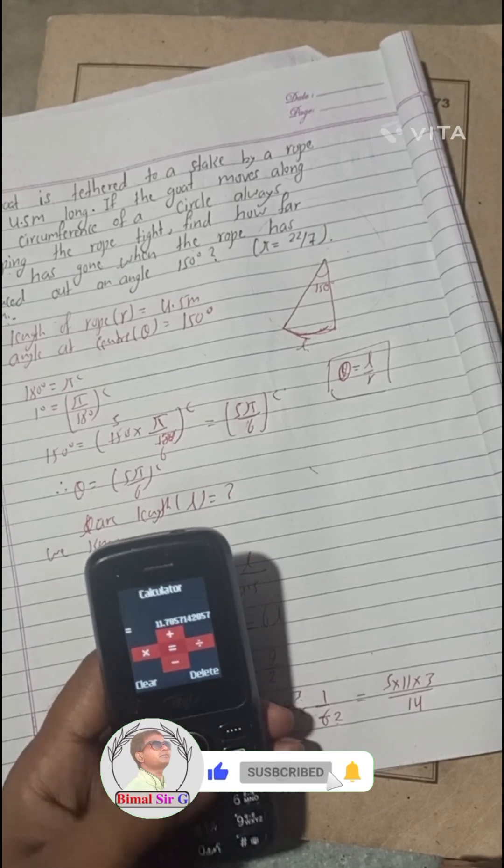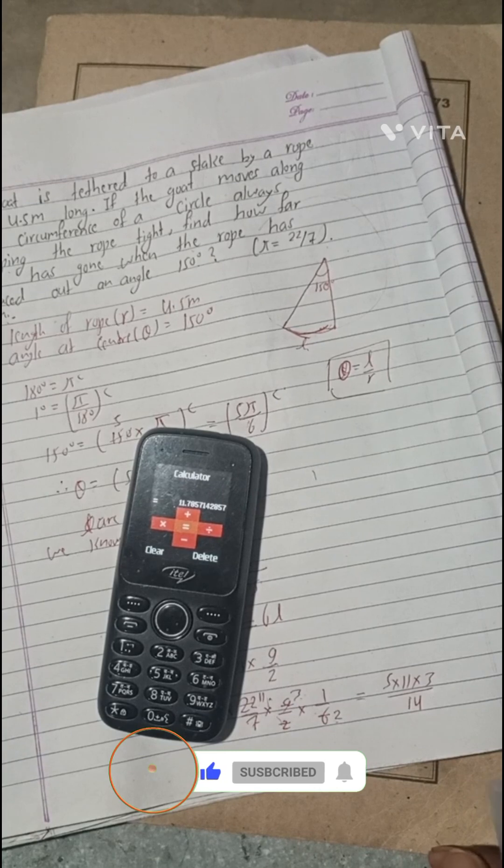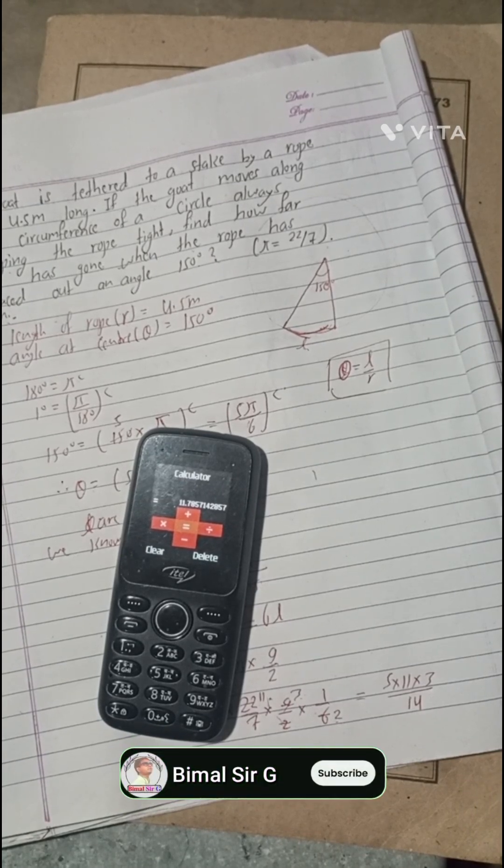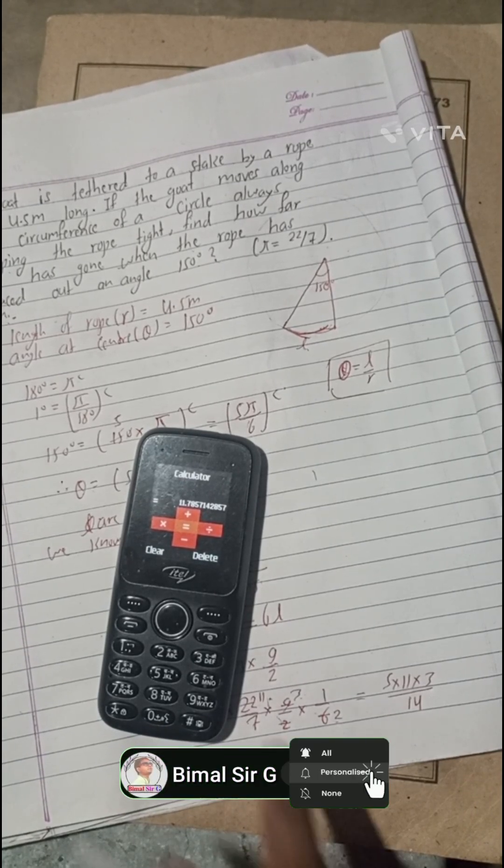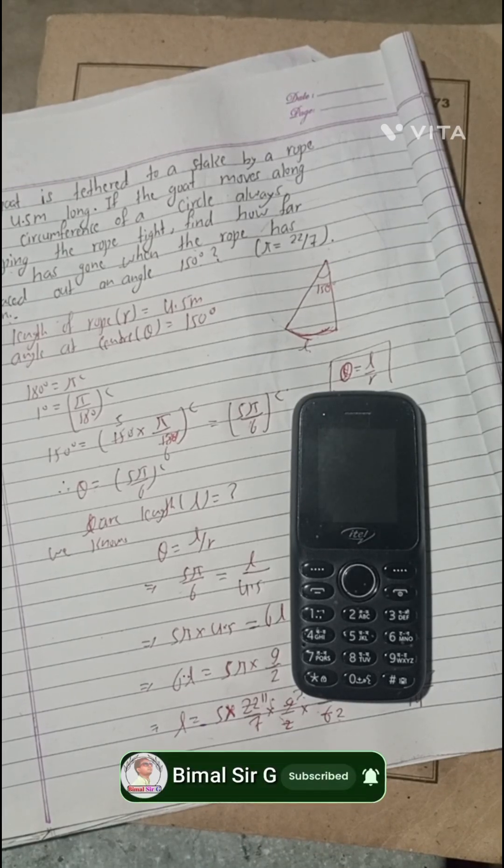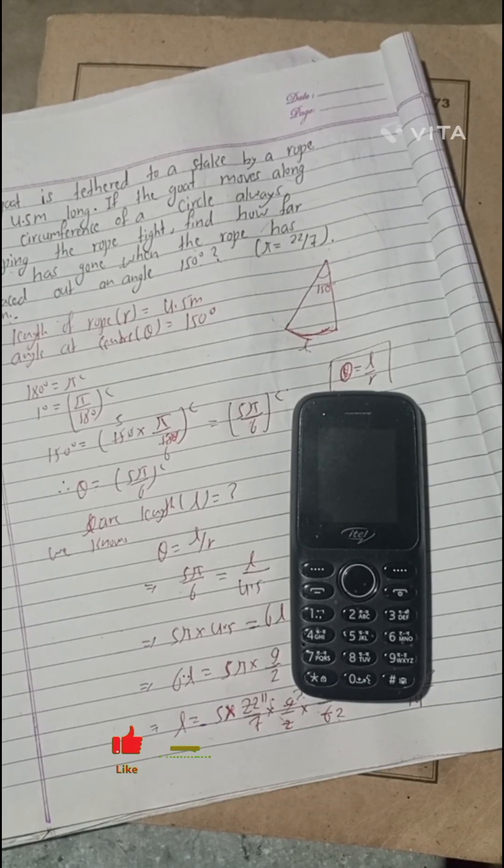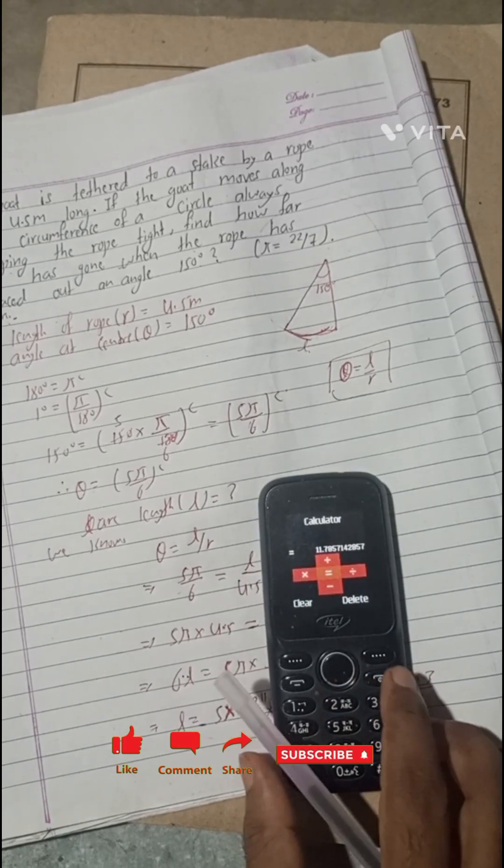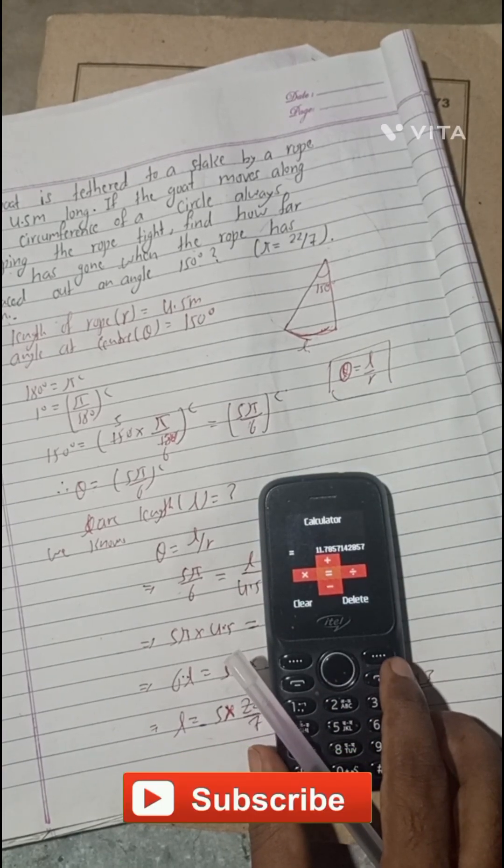When we calculate this, we will get 5 into 11, so 55 into 3 divided by 14. We got here 11.78. Let me see the answer. This is 6a: 11.78, yes.